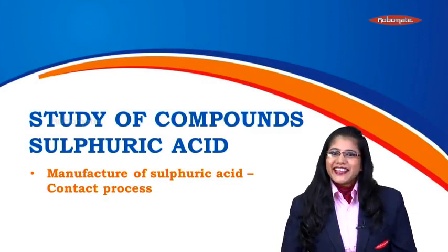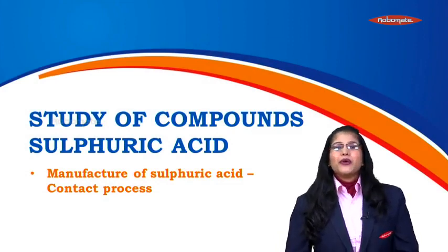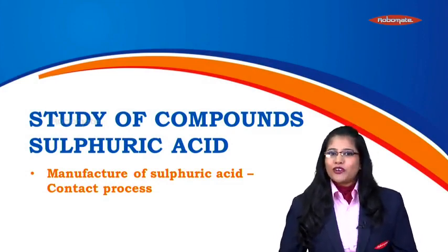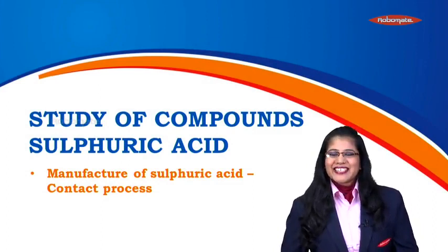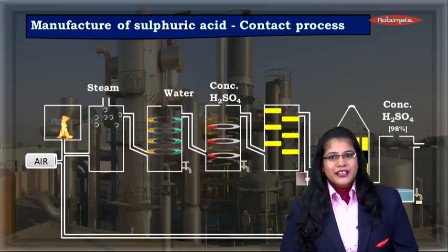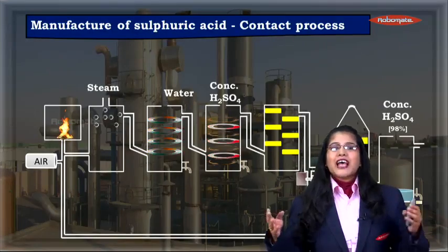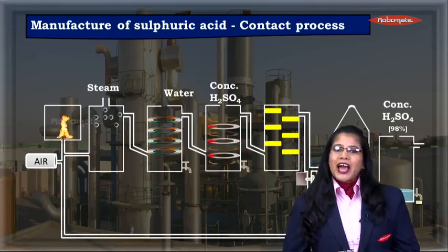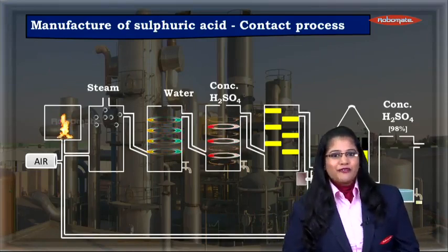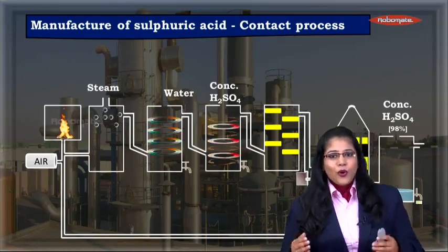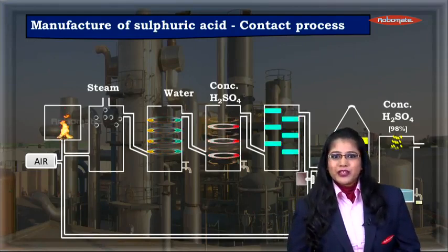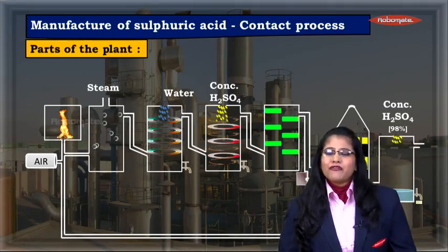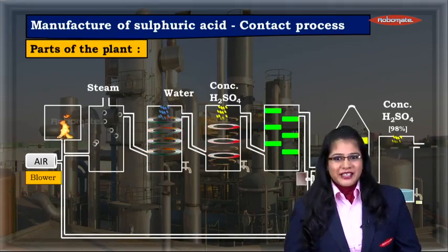Hello students. In this module we are going to study the large scale manufacture of sulphuric acid using the contact process. As we can see on the screen is the set up for the plant of manufacturing of sulphuric acid which is used in the industries. Let's study each and every part of the plant in detail.